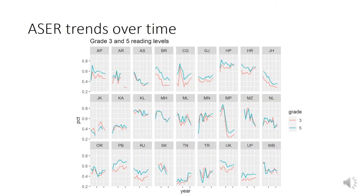Before diving into the formal variance decomposition, it's useful to look at the trend lines of ACER scores over time. This graph shows ACER grade 3 and grade 5 reading levels — for grade 5, the proportion of kids able to read at the highest level (standard 2 level text), and for grade 3, one level below that (sentence level) — for years 2006 to 2014. What you can see is that there is substantial jumpiness to the data, with some squiggles in those lines.